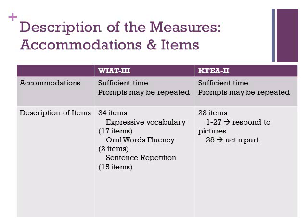For the expressive vocabulary items, the student looks at a picture in the stimulus book, then listens to a definition, and then states the word that matches. The oral word fluency items involve word retrieval, where the student names as many items within a conceptual category in 60 seconds — for example, naming as many hobbies as possible in one minute. The sentence repetition items measure oral syntactic knowledge and working memory, where the student listens to and repeats sentences word for word.